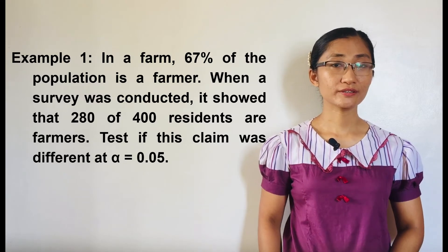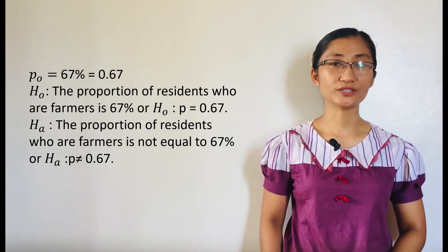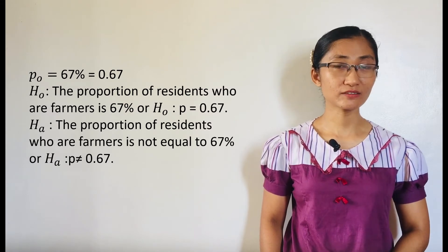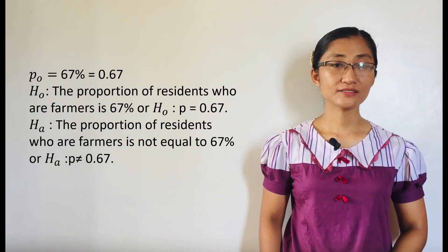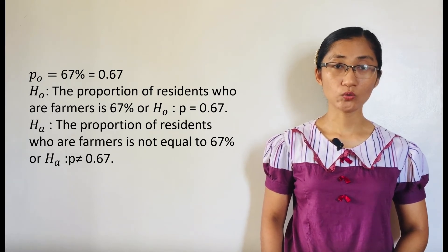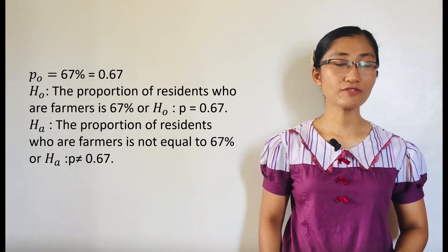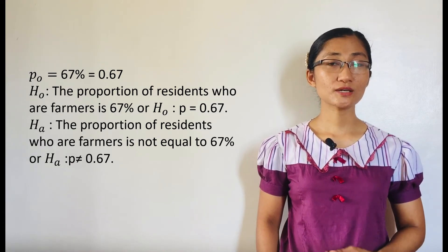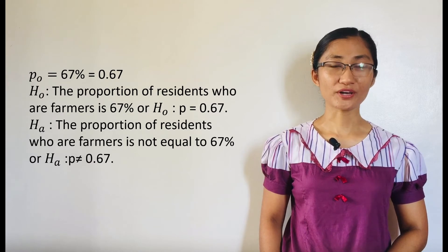For the solution, the hypothesized proportion, P sub O, is 67%, or 0.67. Thus, the null hypothesis is H sub O: the proportion of residents who are farmers is 67%, or H sub O: P equals 0.67.